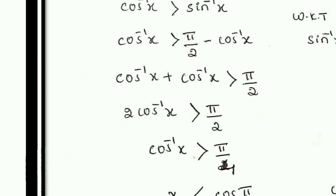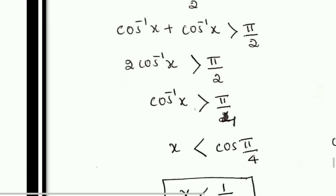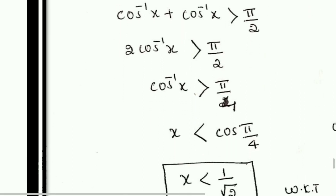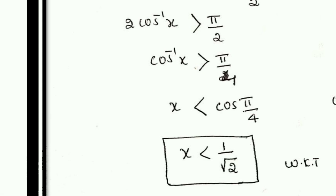Our result is: 2cos⁻¹x is greater than π/2. There is π/2. Now cos⁻¹x is greater than π/2 divided by 2, which equals π/4.